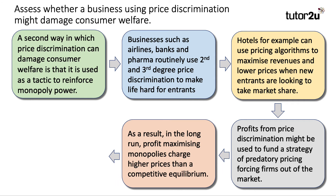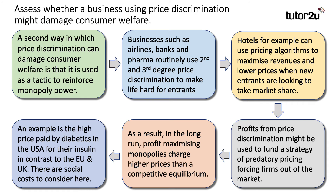As a result, in the long run, if you maintain your market power, profit-maximising monopolies can charge a higher price than the competition. A good example and application: the high price paid by diabetics in the USA, who pay a much higher price for insulin compared to people in the European Union and the UK. And there are social costs here, because high insulin prices can cost lives.